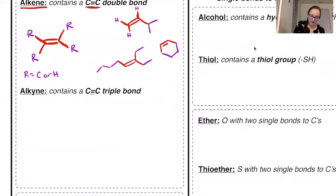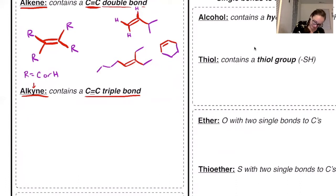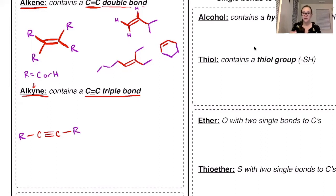Next we have alkynes — again, the only difference in the name is the 'y.' An alkyne contains a carbon-carbon triple bond. The general scheme is C triple bond C, with an R group on either side. We only have one R group on either side because each carbon already has three bonds. I'll also draw this without writing in those carbons, since you'll see it both ways.